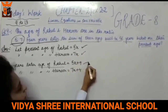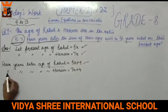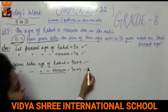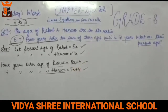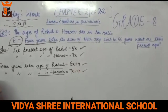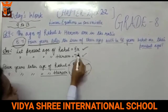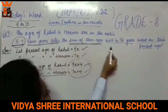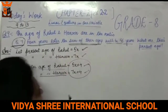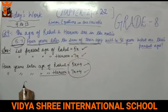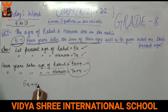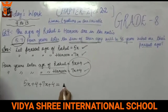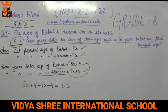Four years later, Rahul's age becomes 5x plus 4. And Harun's age 4 years later becomes 7x plus 4. The sum of their ages after 4 years is given as 56 years.